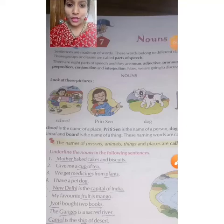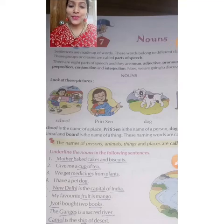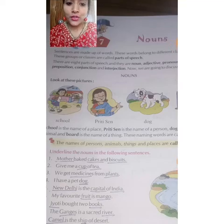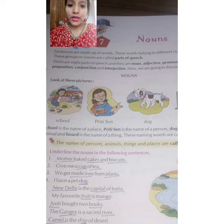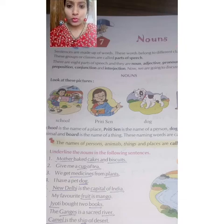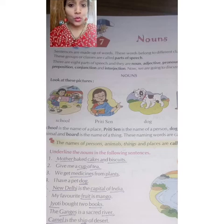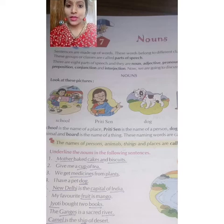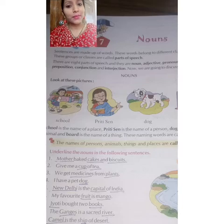Hello, good morning my dear students! How are you all? Today we would be doing our chapter number seven of English grammar, that is Nouns. Everybody knows what a noun is — noun is the name of a person, place, animal or a thing.